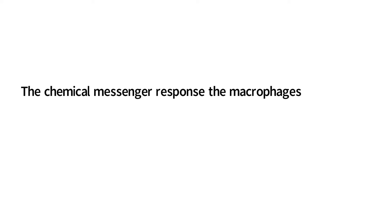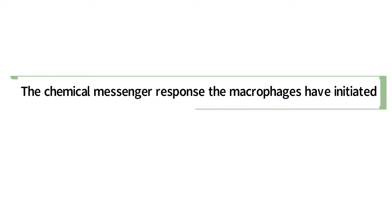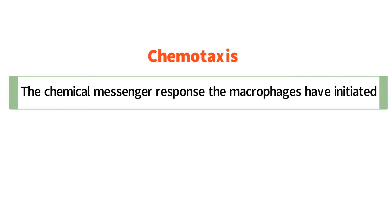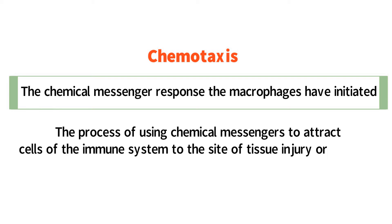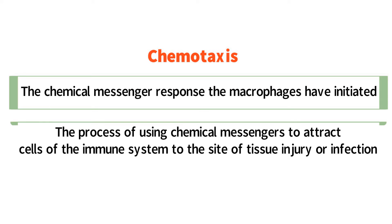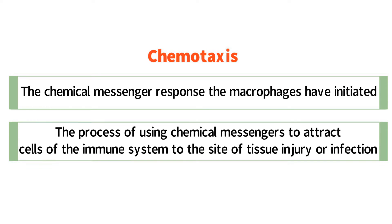The chemical messenger response the macrophages have initiated is known as chemotaxis — the process of using chemical messengers to attract cells of the immune system to the site of tissue injury or infection.